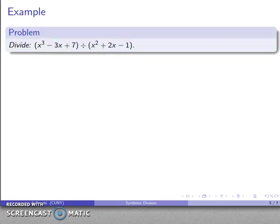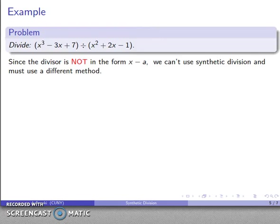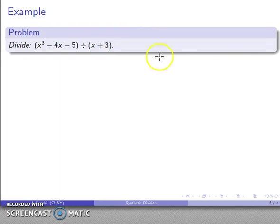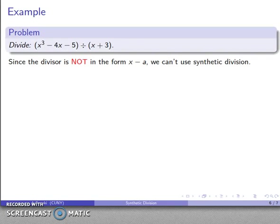Now the most important thing about synthetic division is that we can't divide anything other than x minus a. So something like this is not a synthetic division type problem; we have to do something else. And this x³ minus 4x minus 5 divided by x plus 3, well the divisor is not in the form x minus a, so we can't use synthetic division. Or can we?